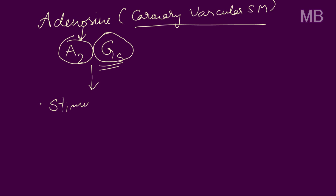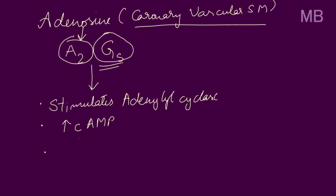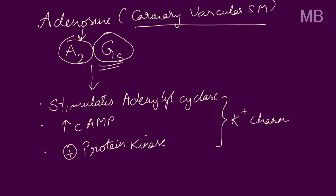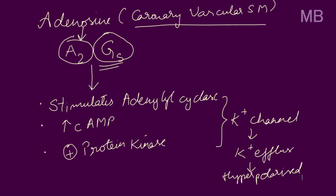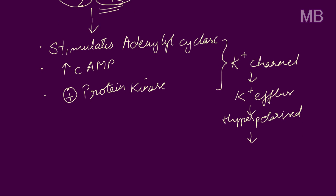It stimulates adenylyl cyclase, and also increases cyclic AMP, and produces protein kinase A. These factors bring about opening of K+ channels, due to which K+ efflux occurs and the cell gets hyperpolarized, leading to vascular relaxation.